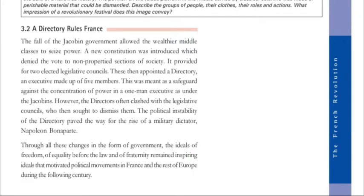The fall of the Jacobin government allowed the wealthier middle classes to seize power. A new constitution was introduced which denied the vote to non-property sections of society. It provided for two elected legislative councils.